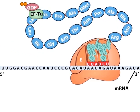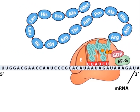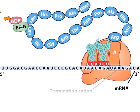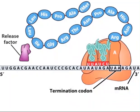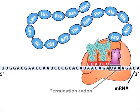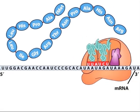Instead, a release factor recognizes and binds to a termination codon and then stimulates the hydrolysis of the bond between the tRNA and the polypeptide chain at the P site. The completed polypeptide is released from the ribosome.